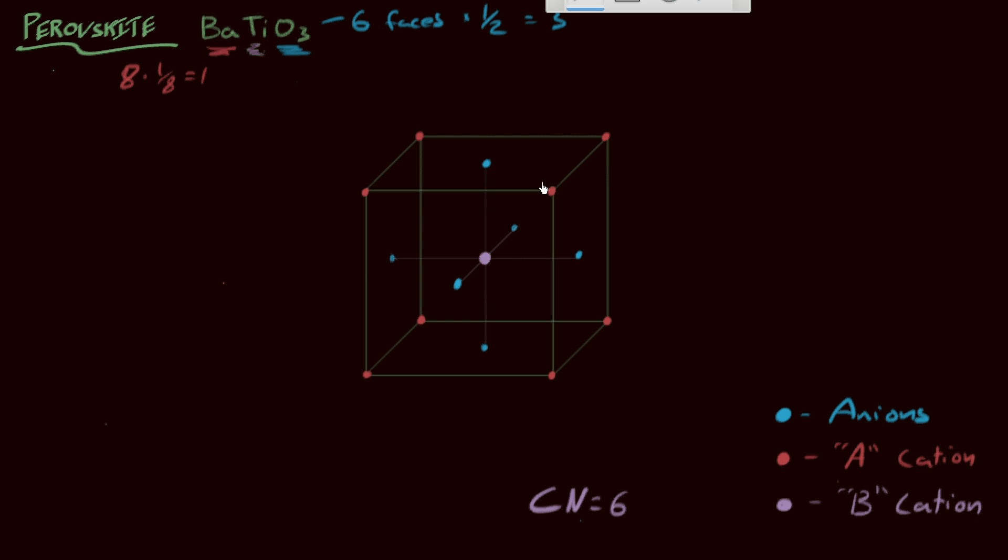So the A cation is going to be touching this face-centered. Let's make a thinner line here. It's going to be touching that face-centered one, right? It's touching across that face diagonal direction. So that means it's also touching this right side face-centered anion. And then, of course, across this front face of the cube here as well, it's also touching.